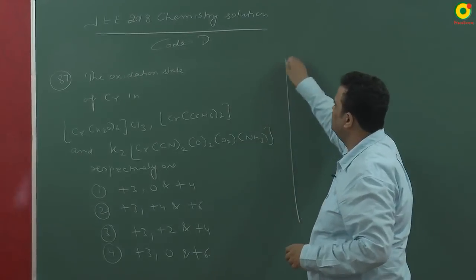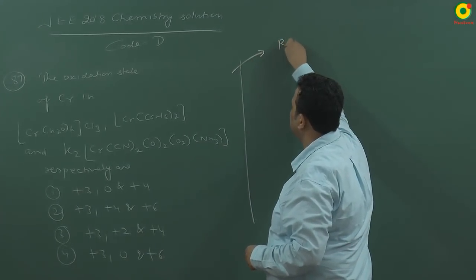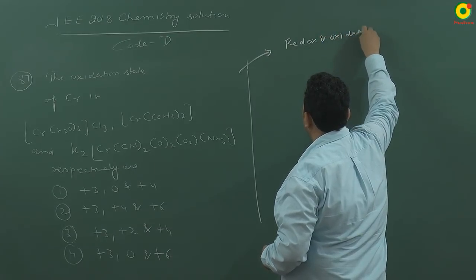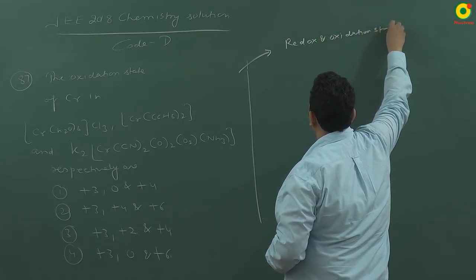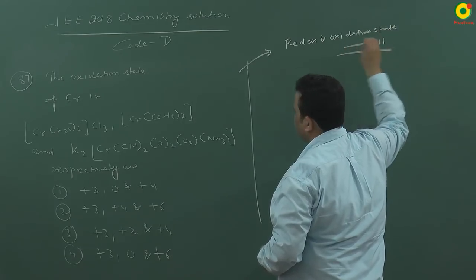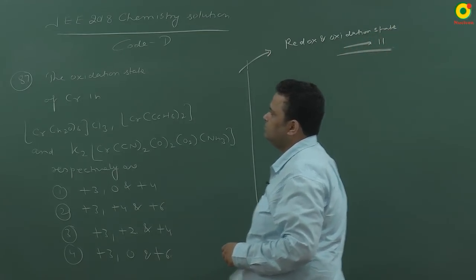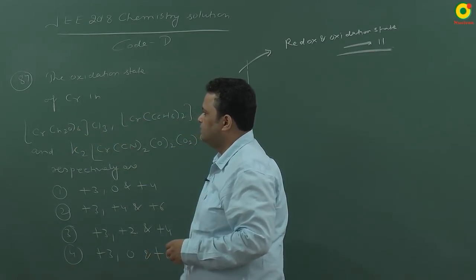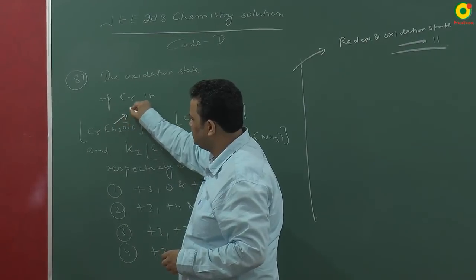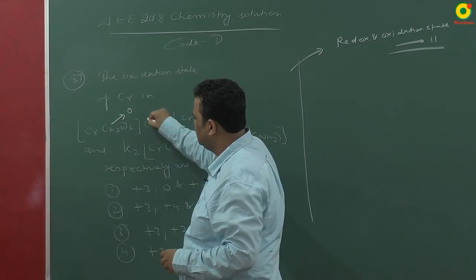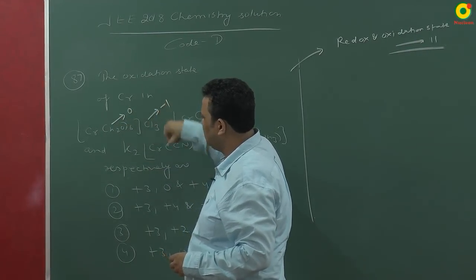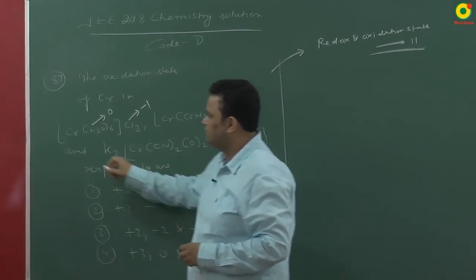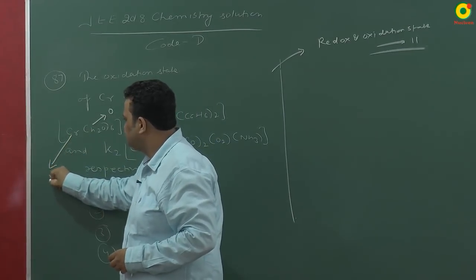Question is from 11th chapter redox and oxidation state, which is in 11th class. He is asking about the oxidation state of chromium in these three compounds. We can say that water is having oxidation number neutral molecule 0, chlorine is having minus 1 state. After solving, the first compound is having chromium state is plus 3.